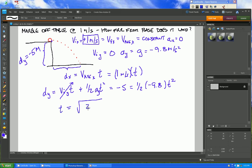We get t is equal to the square root of two times negative five over a, which is equal to negative 9.8. The negatives cancel so we don't have a problem of trying to take a square root of a negative number, and this time comes out to be I believe 1.02 seconds, just over one second.